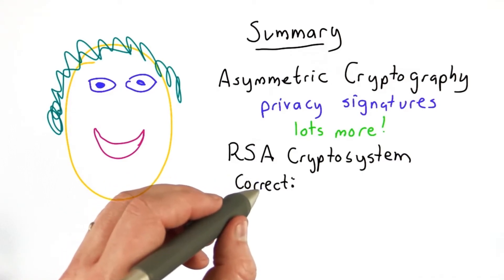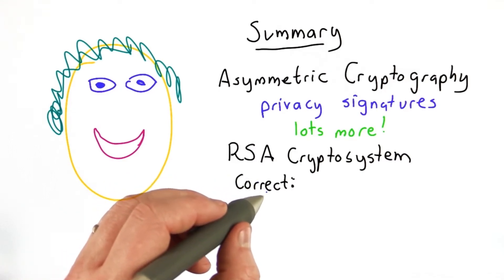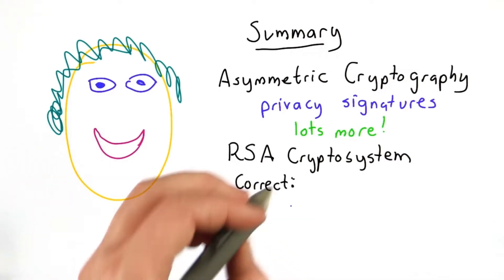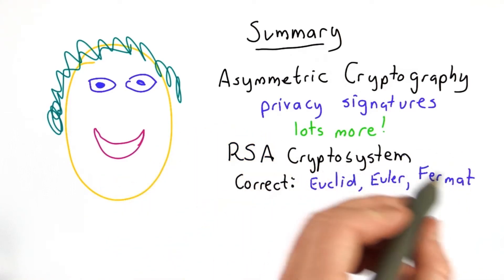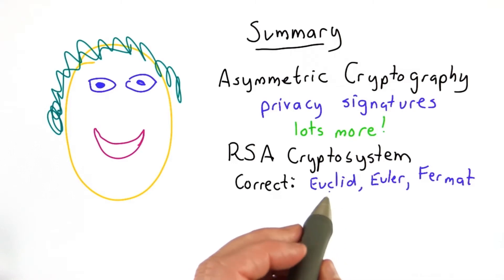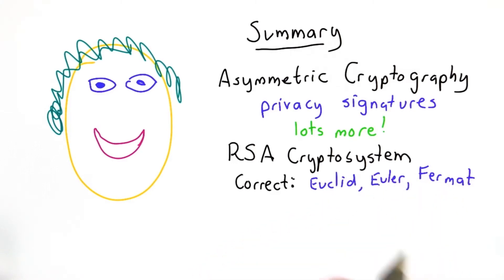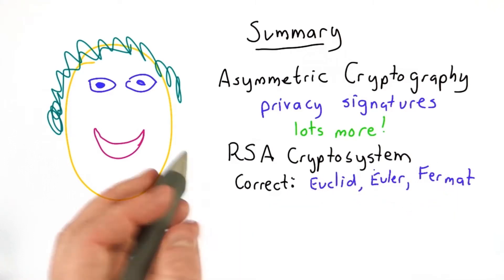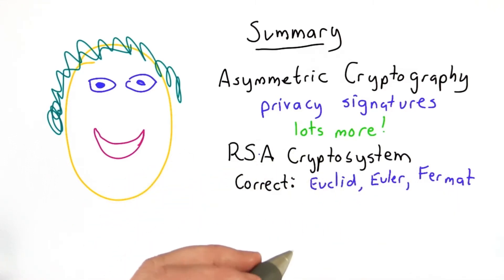We argued that RSA was correct — that it was invertible and had all the properties that we needed to be able to encrypt and decrypt messages. Its correctness depended on theorems that go back thousands of years from Euclid, and more recent ones — but still many hundreds of years old — from Euler and Fermat. And it's putting those things together in the right way that led to this solution that enables most of modern e-commerce.